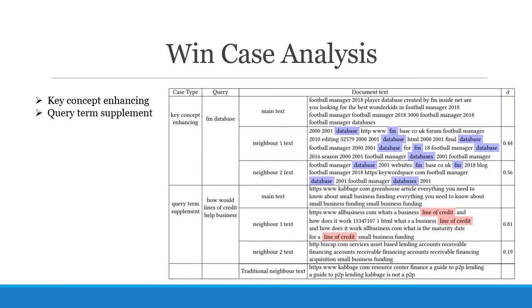The case study reveals that the improvement from co-click information mainly comes from two aspects: key concept enhancing and query term complementary. In the case of key concept enhancing, the query is 'FM database,' which contains two concepts: FM and database. However, the good document contains a lot of other concepts, such as FM inside net and best wonder kids. This information has nothing to do with the core content of the document itself and will add bias to the document's vector in the vector space if the model can't distinguish them from the key concepts. When the neighbor information helps, the situation becomes very different. Both the two neighbor texts we introduced through the co-click relationship contain a lot of terms like FM and database, especially the database that appears only twice in the original text.